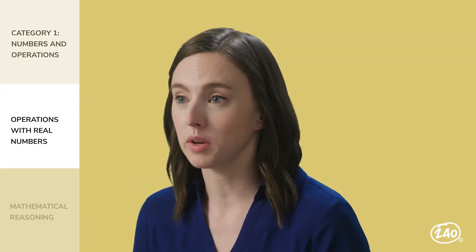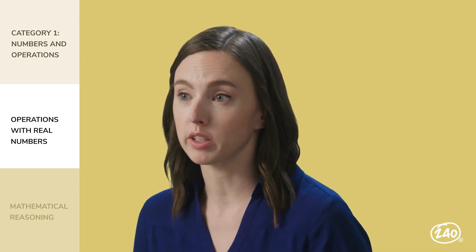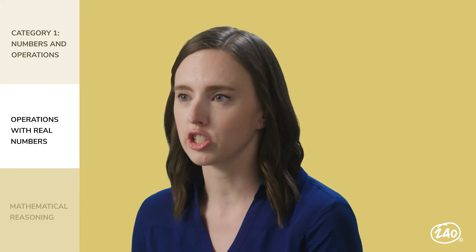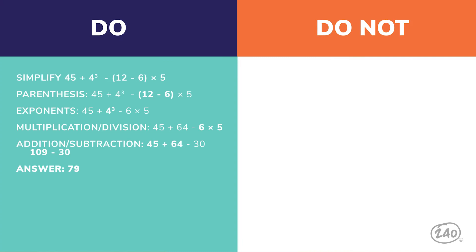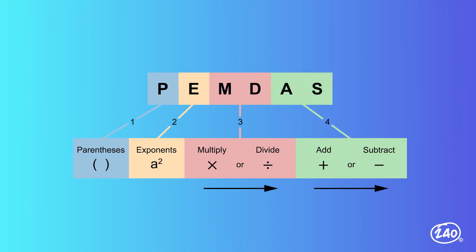Let's dive into operations with real numbers. In this section, you're going to need to be able to solve using real numbers, including decimals, percentages, and fractions, and you'll have to follow standard math rules. Make sure you use the order of operations to solve for the correct answer — solving the problem without using the order of operations would leave you with the wrong answer. It's all about knowing which step to do first. Remember PEMDAS? That whole 'please excuse my dear Aunt Sally' thing? Use it!